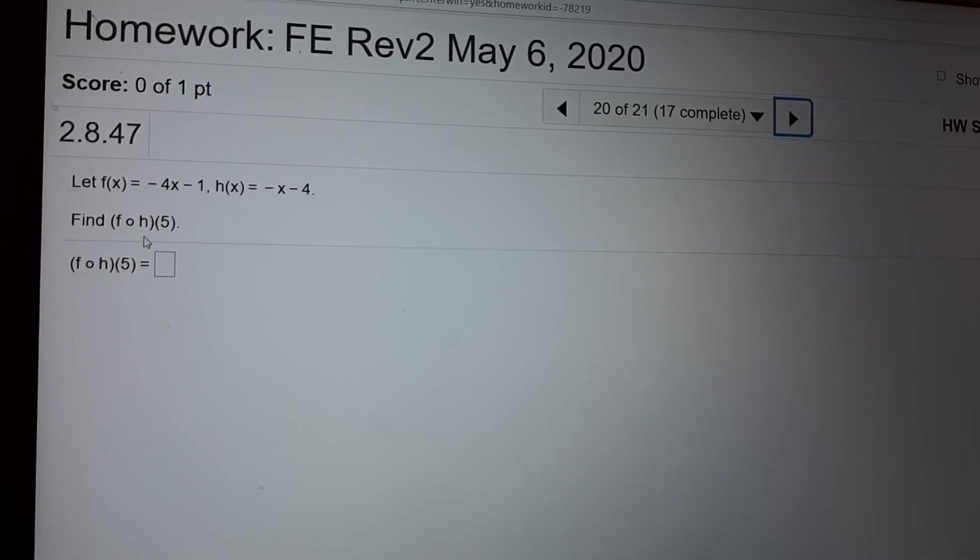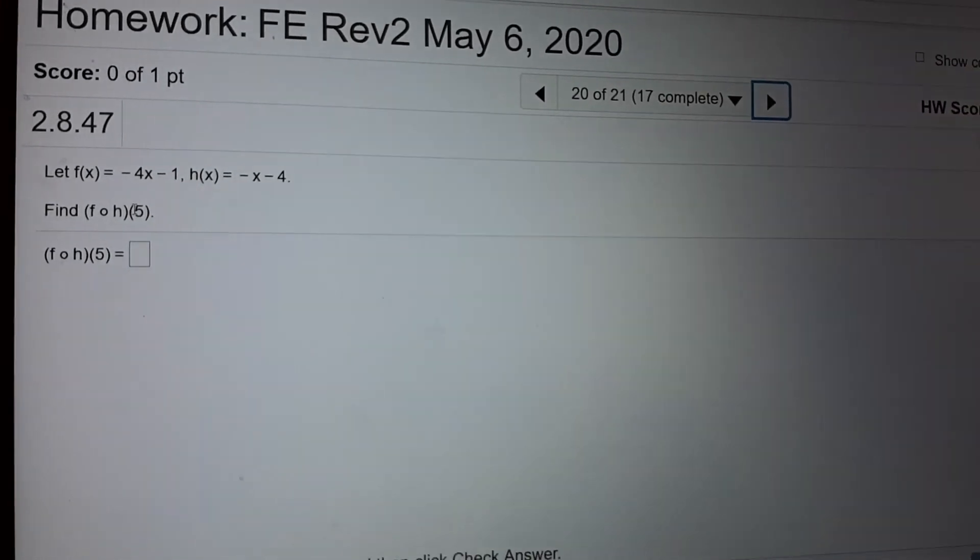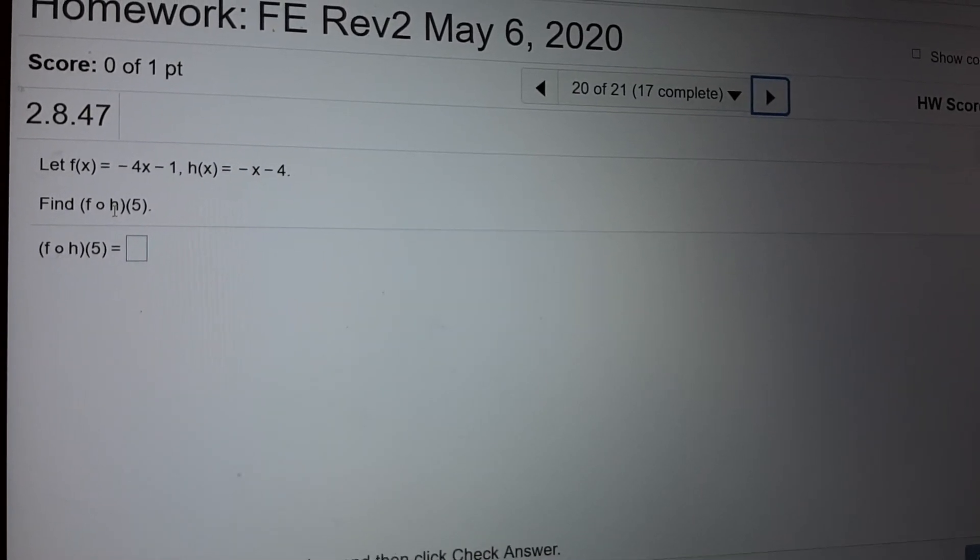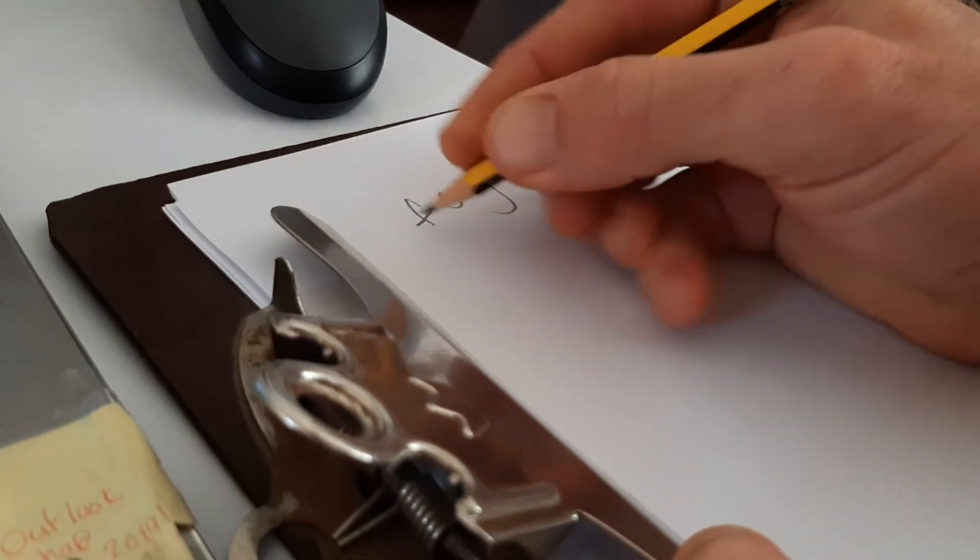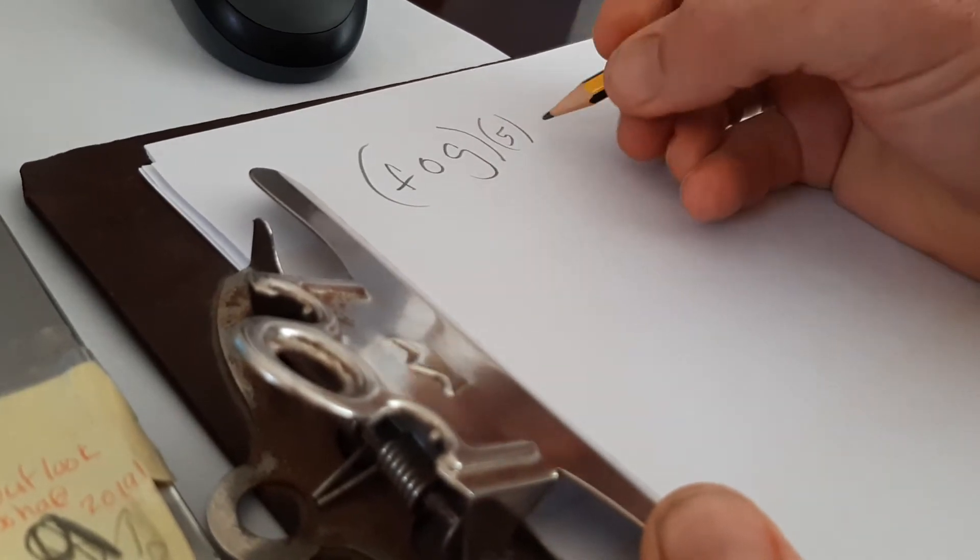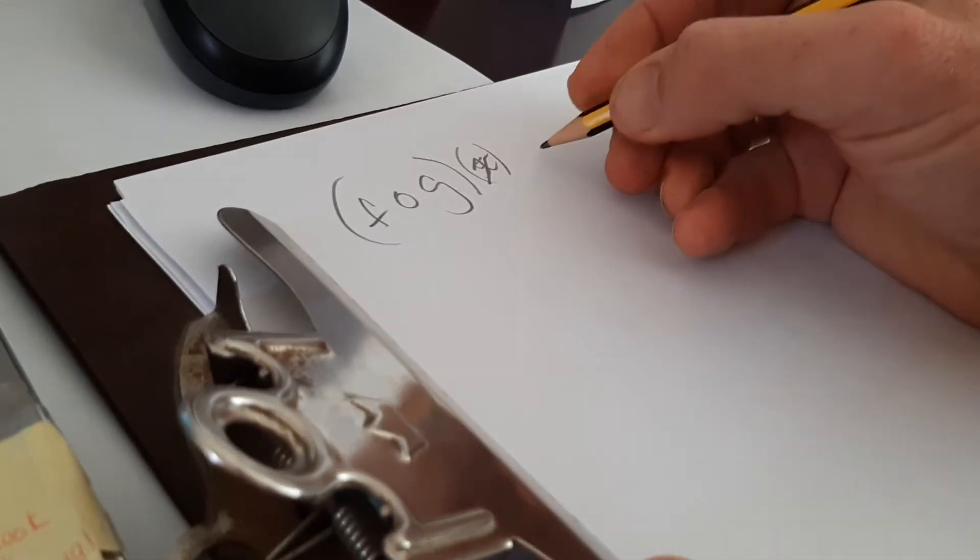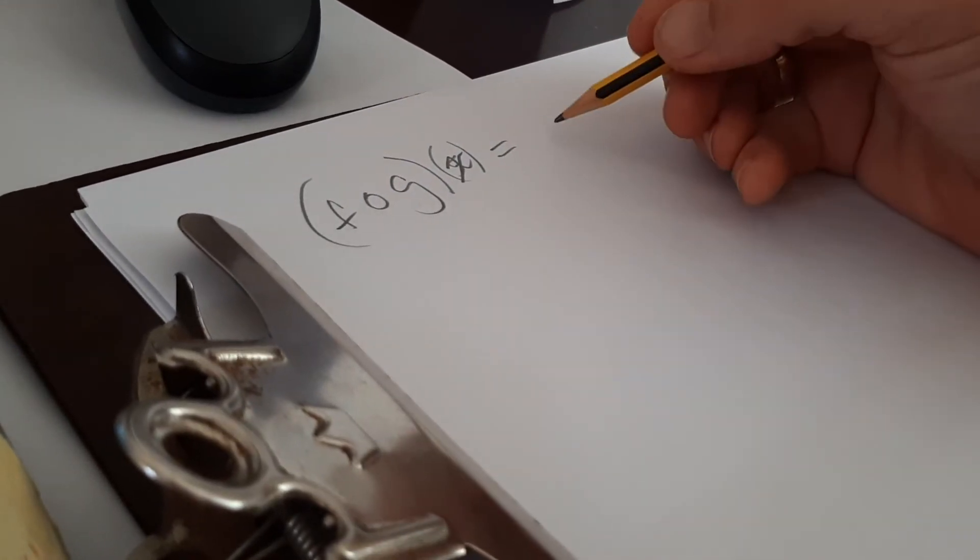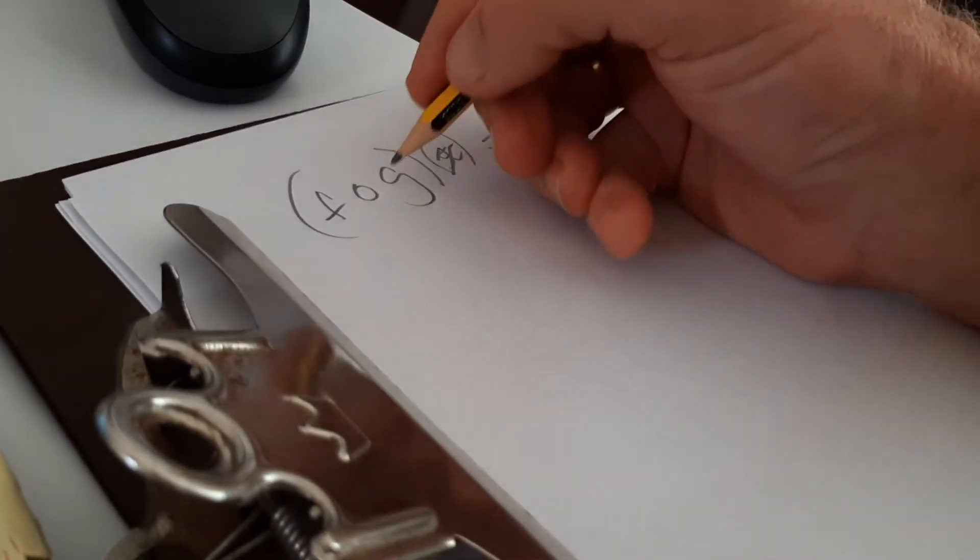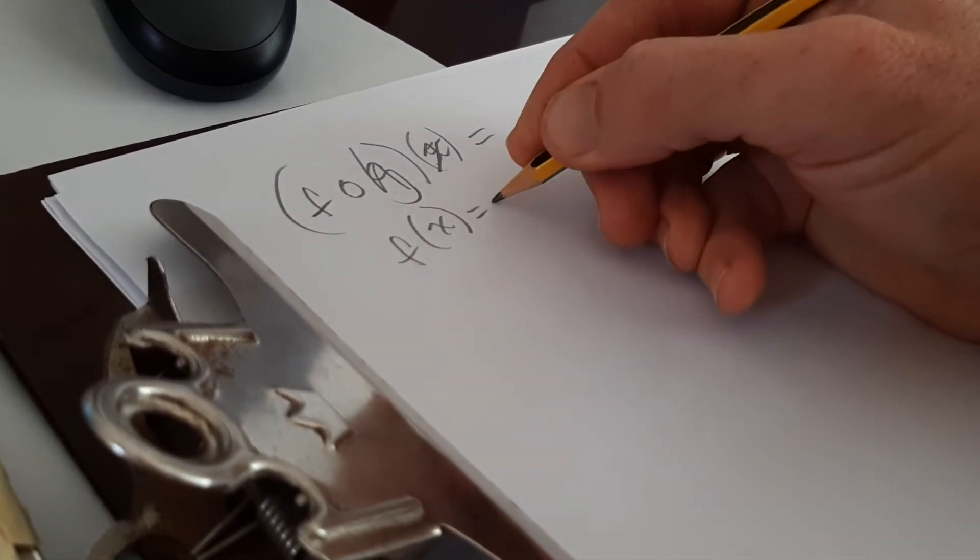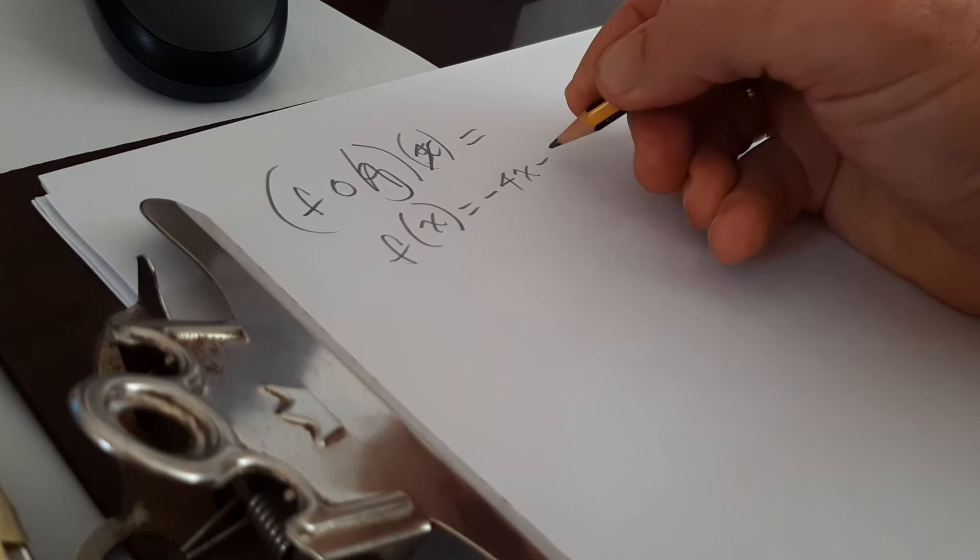Okay. f of h, okay? Let's do this one together. So f o g, okay? f o g of 5. Well, let's do f o g of x first, okay? So you're going to have, what I do is I take the, oh, it's an h. Take, so f of x is minus 4x minus 1.